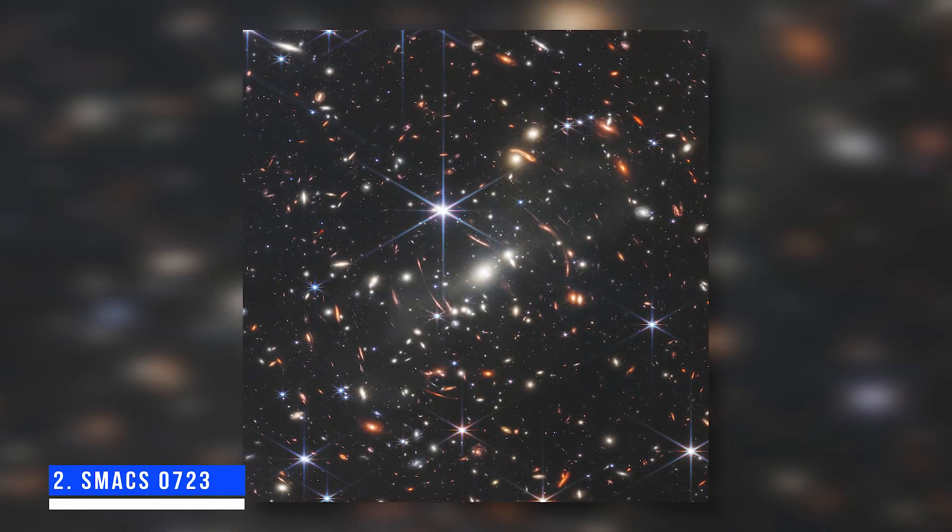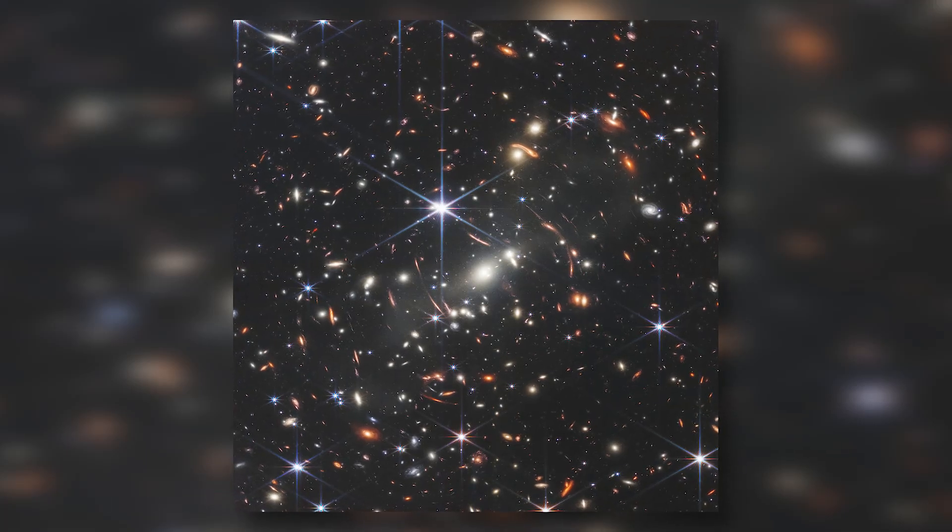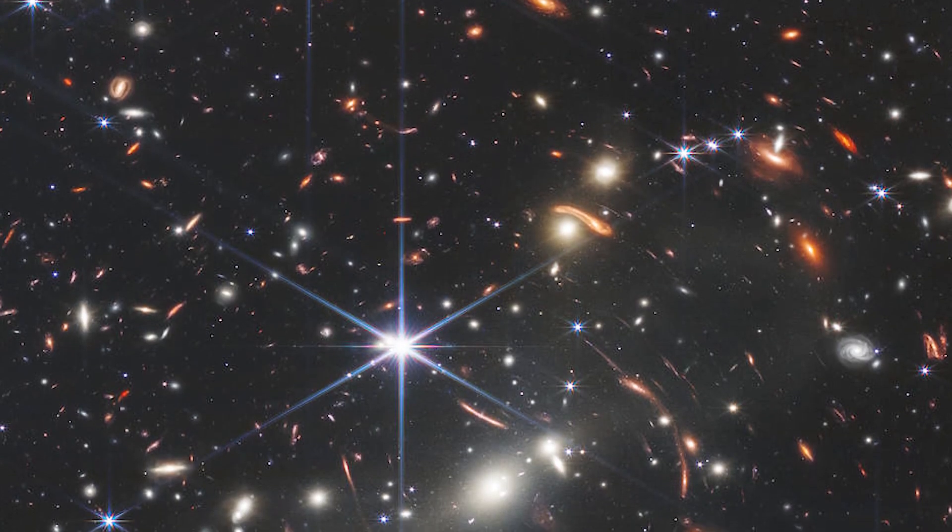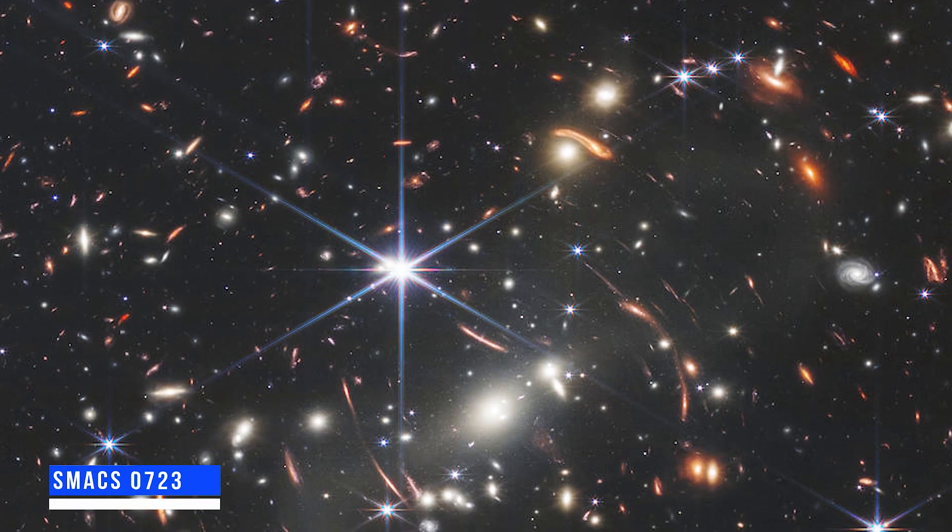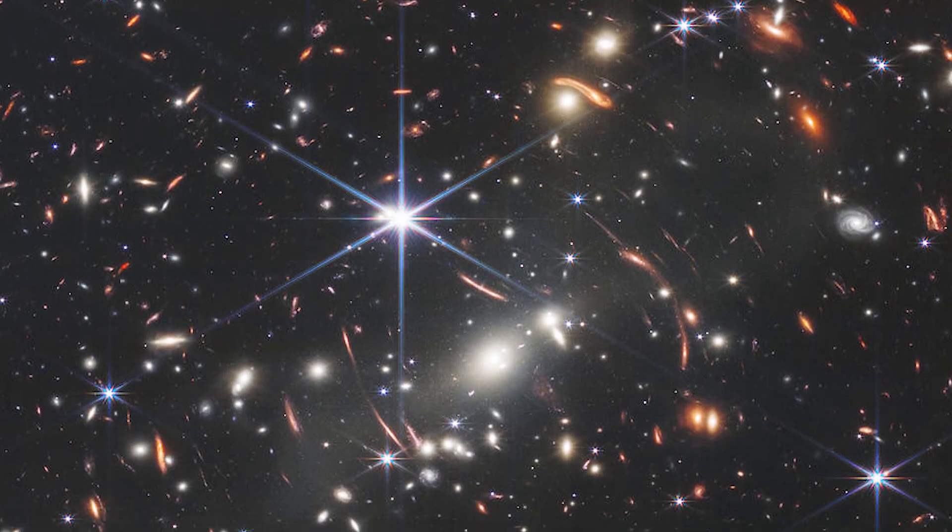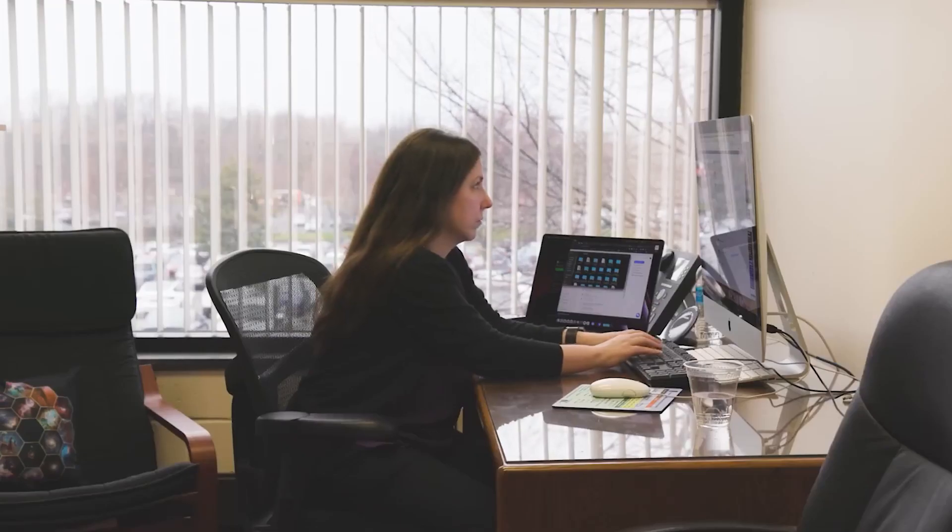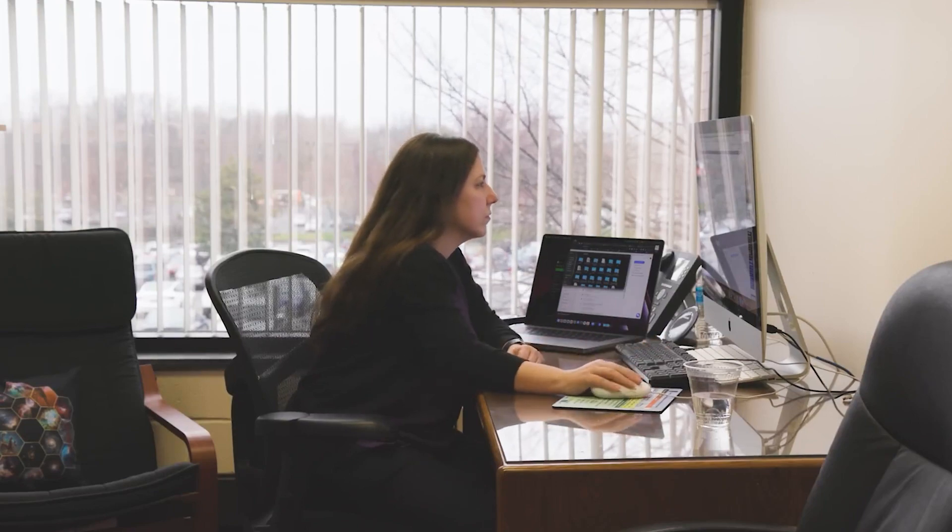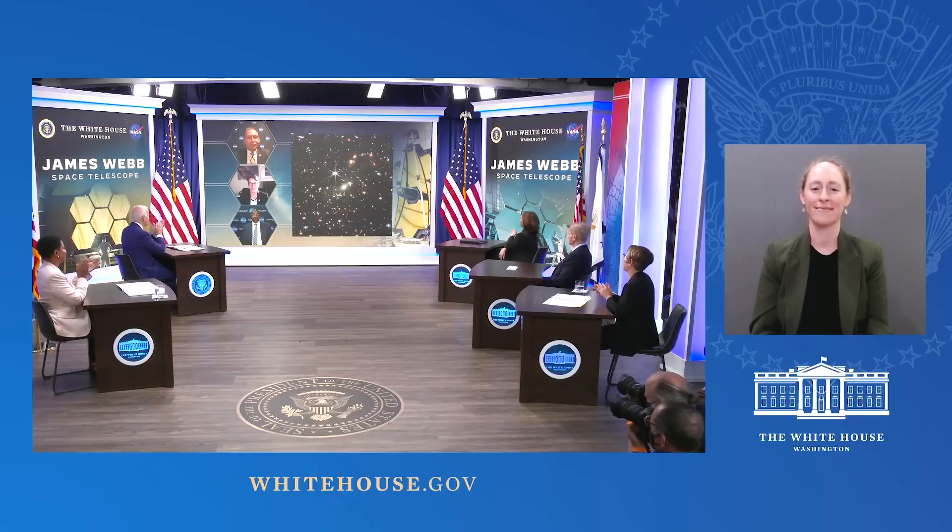Number 2: SMACS-0723. The first officially publicized image obtained by the JWST was SMACS-0723. It was a dream come true for scientists and science enthusiasts worldwide. The image was shown to the public on July 11th at the White House during a live-stream press event with NASA Administrator Bill Nelson.